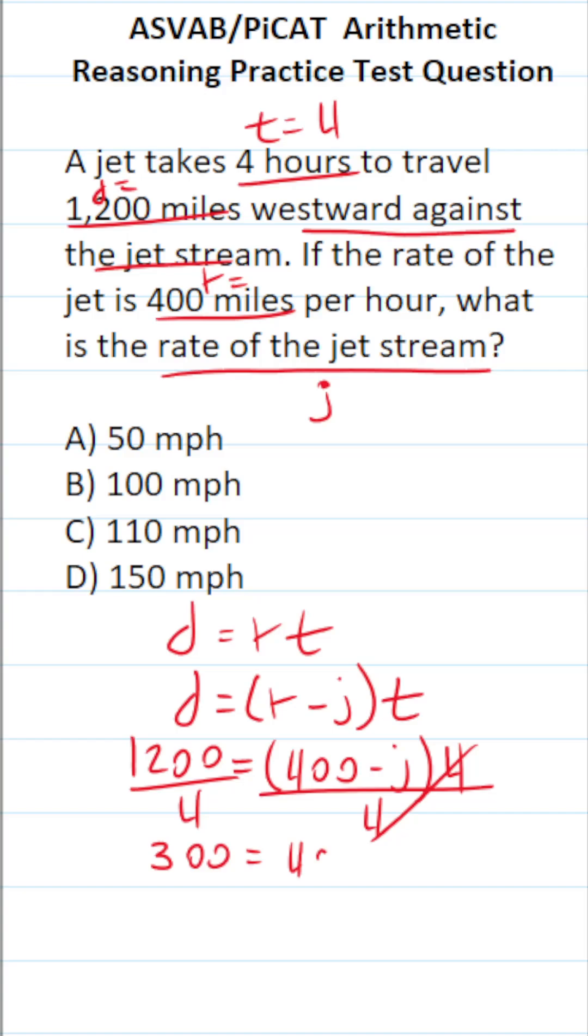We're left with 400 minus J. To get J by itself, subtract 400 from both sides of the equation. This crosses out, leaving negative J. 300 minus 400 is negative 100.